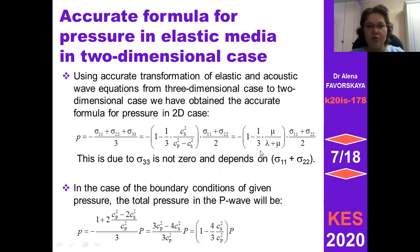Accurate formula for pressure in two-dimensional case might be written as follows. Most people think that if in 3D case is this formula, then in 2D case it will be only sigma_11 plus sigma_22 divided by 2. But the accurate formula is like this, because sigma_33 is not zero and depends on sum of sigma_11 and sigma_22. In the case of boundary conditions, the total pressure in acoustic case is with wave coefficient, so we compare velocity model wave patterns to be accurate.